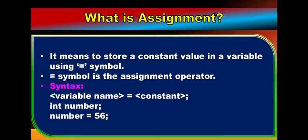Next is assignment. Assignment means storing a constant value into a variable after declaration, and it is done using the equal symbol — equal is the assignment operator. Syntax: variable name = constant; For example: int number; — this is the declaration — then number = 56; — this is the assignment — so here 56 will be assigned to the variable number.